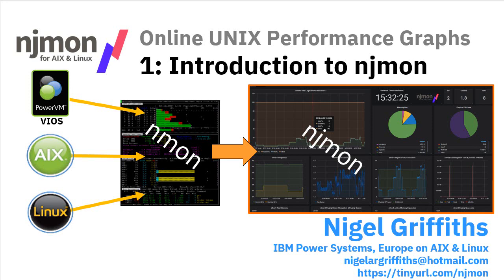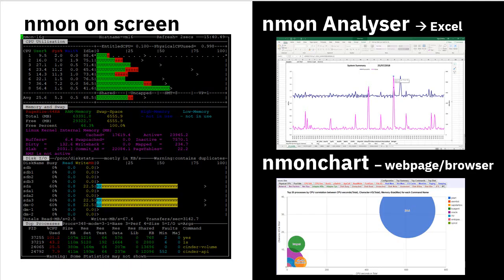Slightly later, we started a version for Linux — on the same Power processor as AIX uses, but also on mainframes, AMD64, and ARM processors. Anything that runs Linux is capable of running nmon. It also runs on the Power VM VIO server — the virtual I/O server. And now we're moving to a newer project called njmon, where the J stands for JSON. So I'm going to tell you about njmon by comparing it to the older nmon.